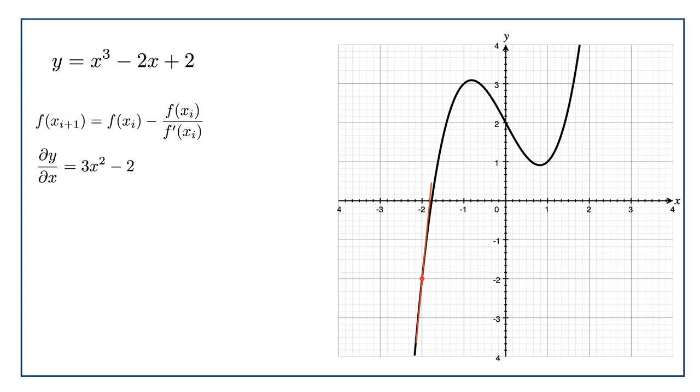So let's see how it plays out. We can make a table starting with our initial guess at i equals 0, and then we can find the gradient and the intercept, and then use that to generate a new guess. In this case, minus 2 minus minus 2 divided by 10 gives us minus 2 plus 0.2, which is minus 1.8.